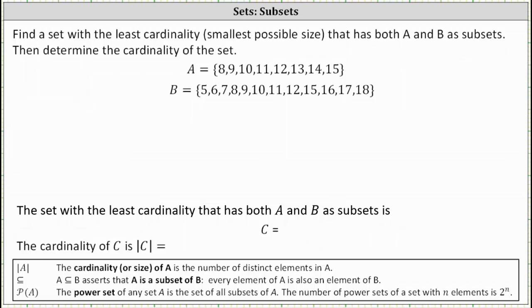We're asked to find a set with the least cardinality, meaning smallest possible size, that has both A and B as subsets. Then we're asked to determine the cardinality of the set.